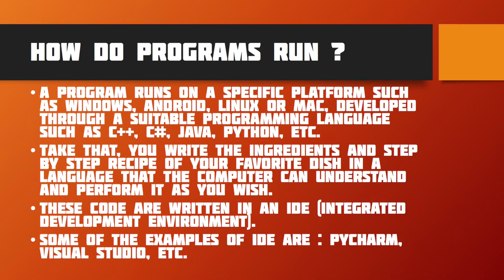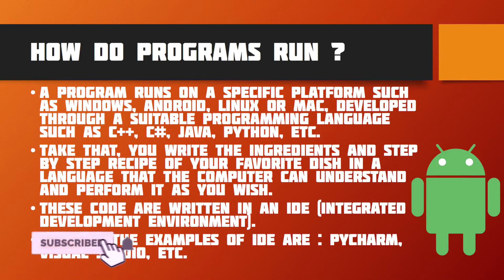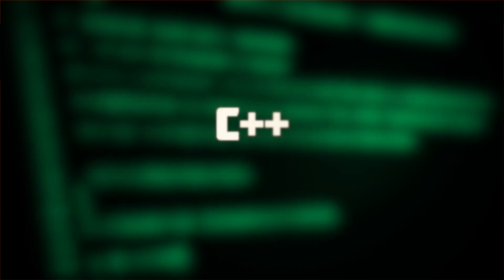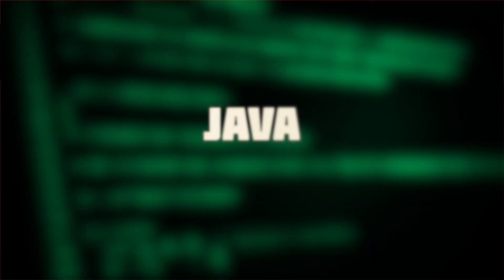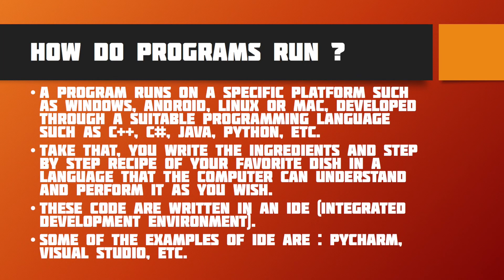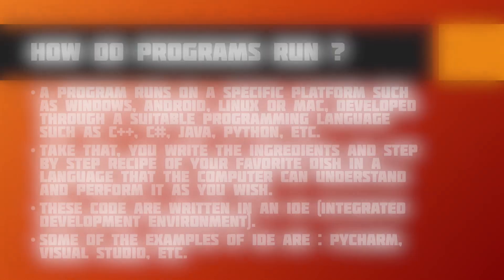How do programs run? A program runs on a specific platform such as Windows, Android, Linux, or Mac, and is developed through a suitable programming language such as C++, C Sharp, Java, Python, etc. Think of it like writing the ingredients and step-by-step recipe of your favorite dish in a language that the computer can understand and perform as you wish.